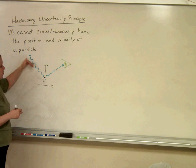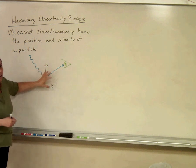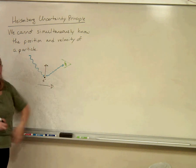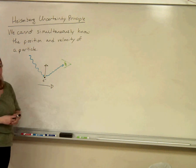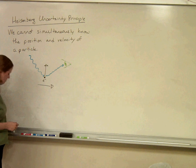As soon as we know the position, we've changed the velocity. And if we were to measure the velocity, then it's no longer at that position anymore. So that's basically, in a nutshell, what Heisenberg's uncertainty principle says. Thank you.